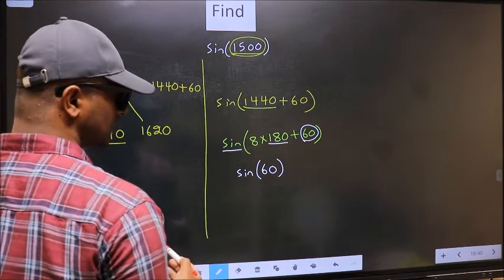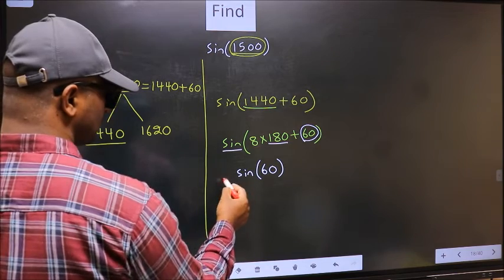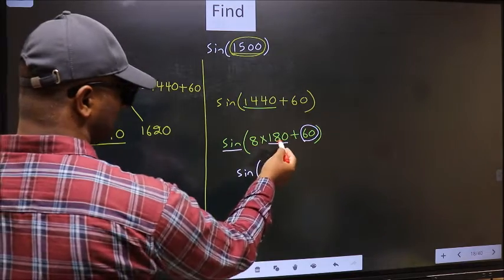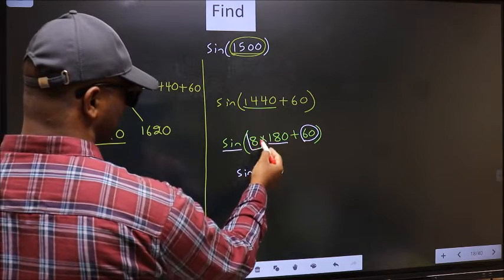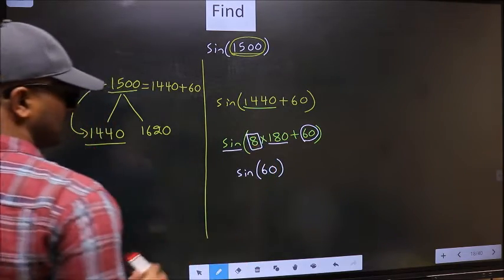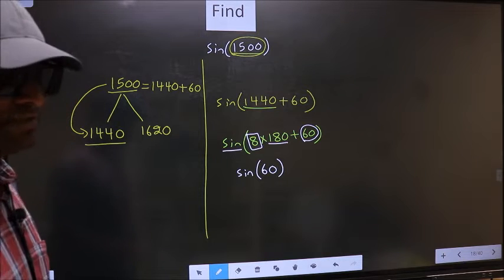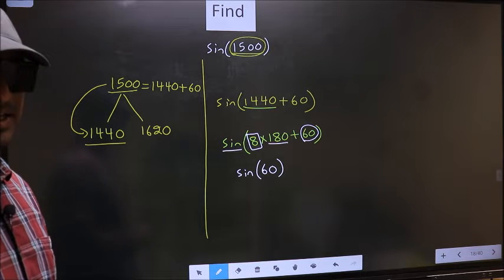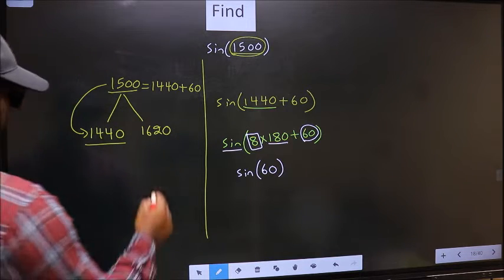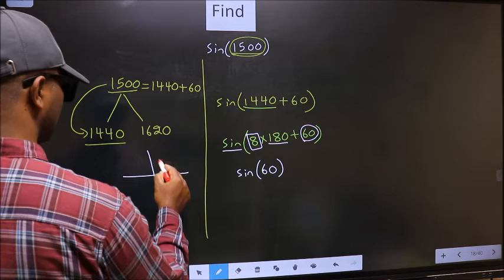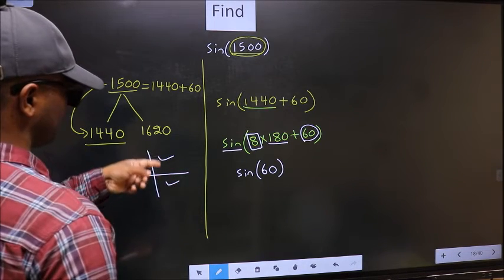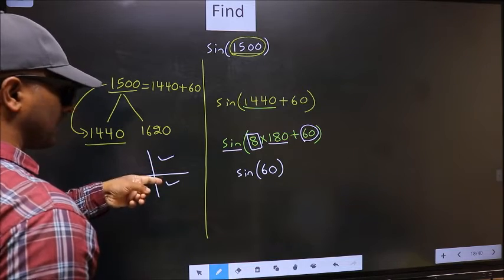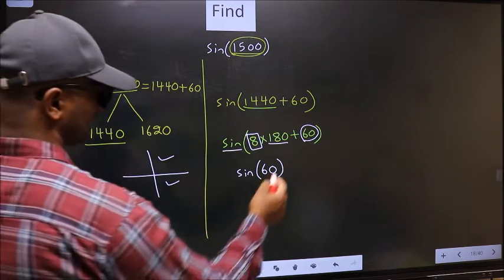Now the question is, will we get plus or minus? To answer that, we should look at the number before 180. That is 8, and 8 is even. All the even multiples of 180 lie in either the first or the fourth quadrant. So to select the quadrant, we should look at this symbol.